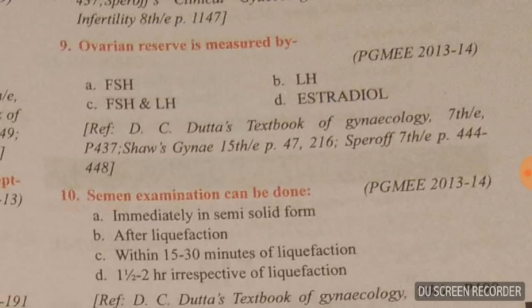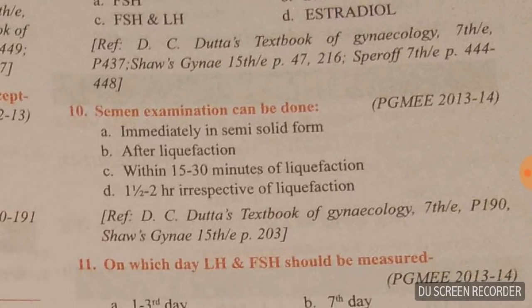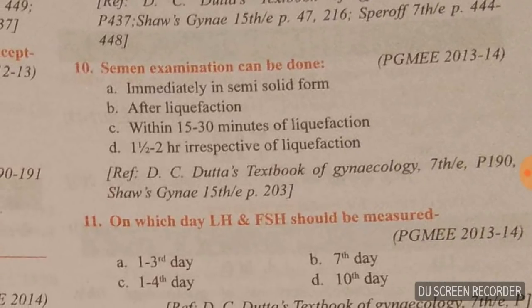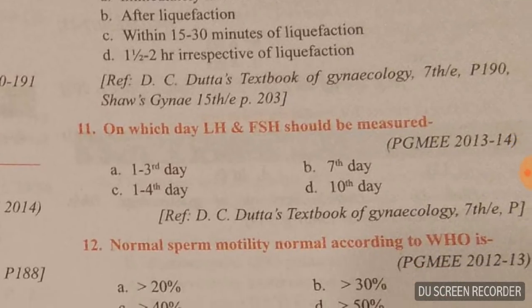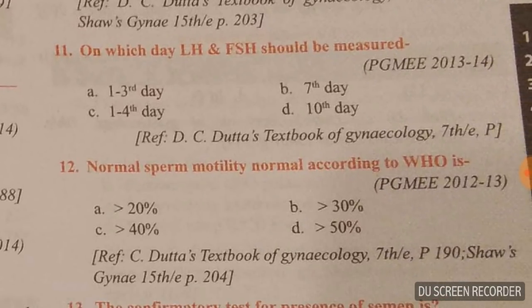Ovarian reserve is measured by FSH — follicle stimulating hormone. Remember: ovarian reserve equals FSH. Question number ten: semen examination can be done one and a half to two hours after collection, irrespective of liquefaction, once the sample has liquefied.